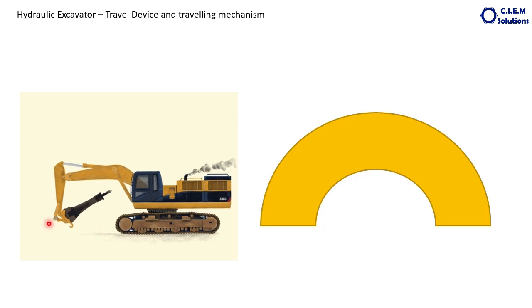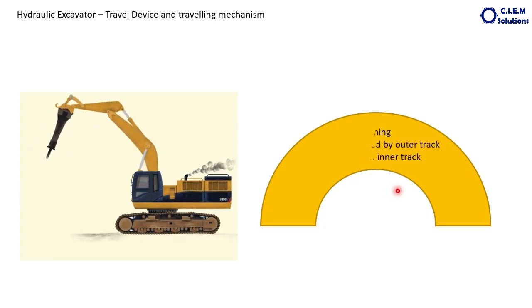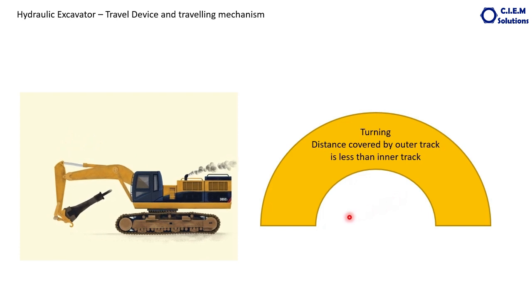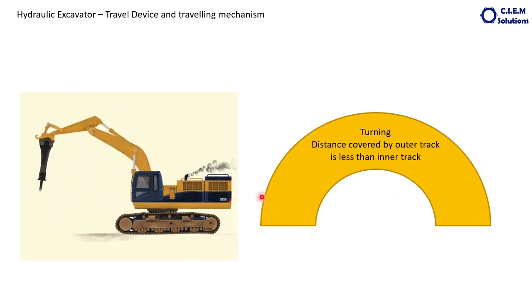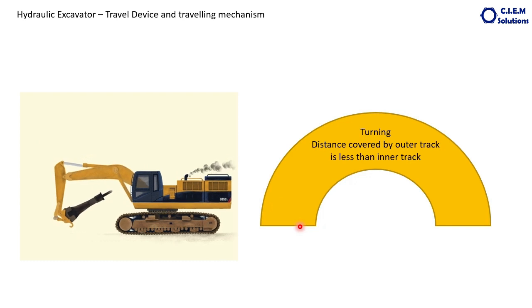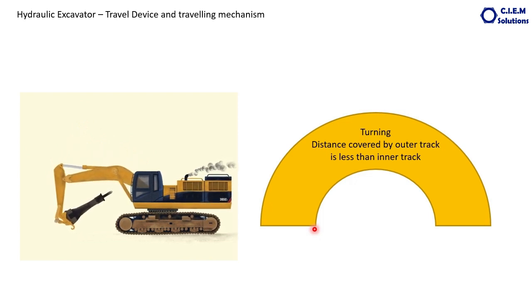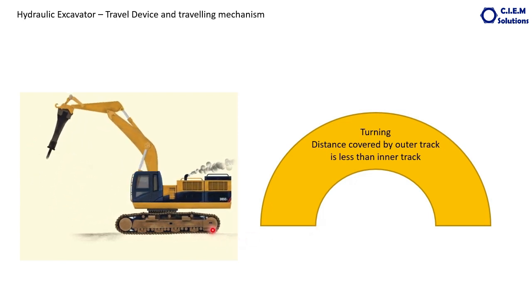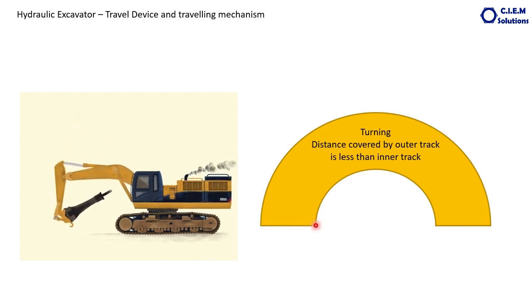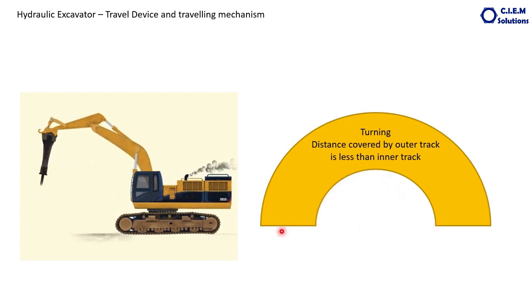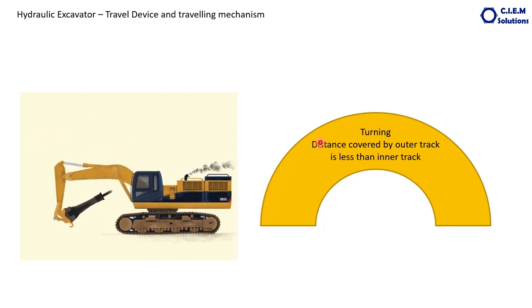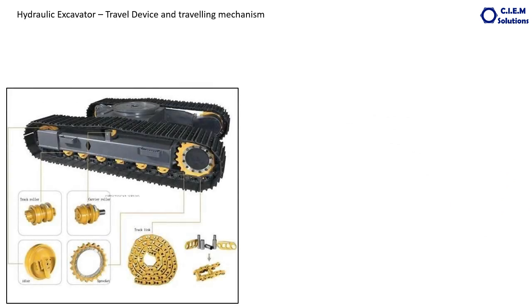To negotiate a turning, we must create a differential speed between the inner track and the outer track. That is possible by controlling the quantity of oil supply to the respective hydraulic motors fitted to the travel devices. Less oil quantity means less rotation and less distance covered. More oil quantity means more rotations and more distance covered. We will now go into detail about each and every component of the travel device as well as the traveling mechanism.